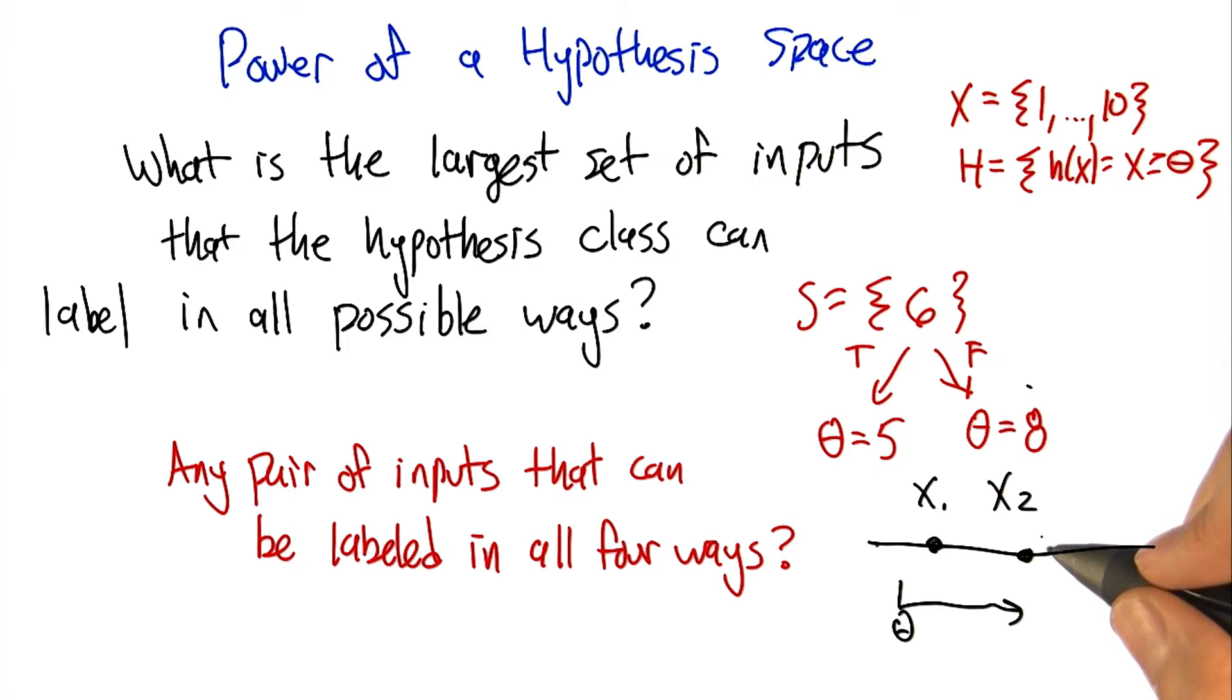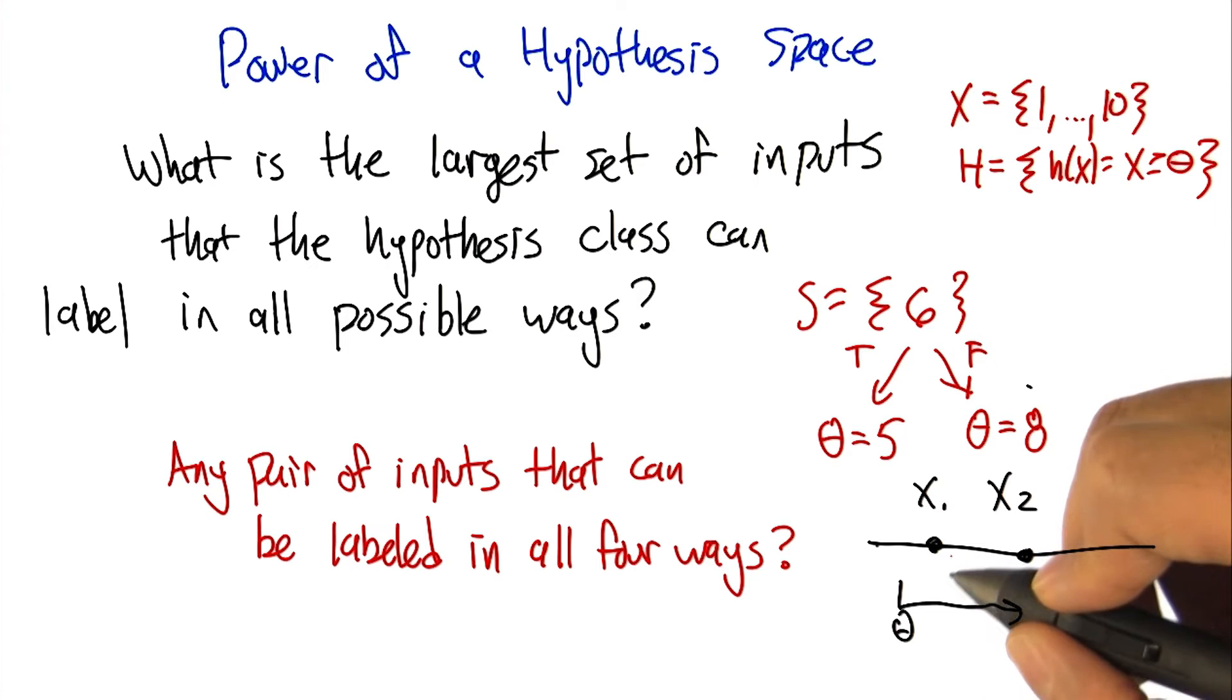All I have to do is make x1 negative and x2 positive, and there's nothing you can do. Is that right? Indeed it is.